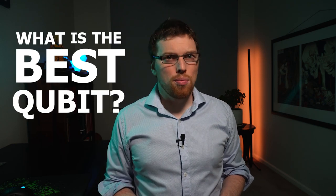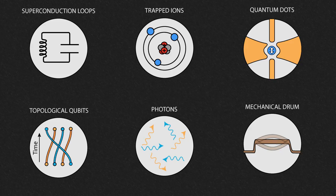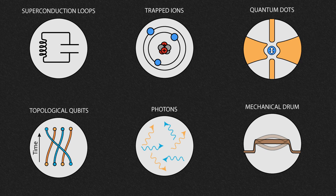And this all comes down to, what is the best qubit? Quantum computers are built from qubits, individual quantum objects that we can control. There are many different types of qubits, such as superconducting loops, trapped ions, quantum dots, topological qubits, photons, mechanical drums, and many more.